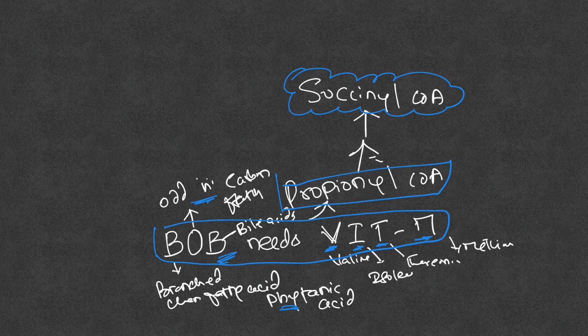There are a variety of reactions that can fill gaps in the TCA cycle — these are all called anaplerotic reactions. This is why the TCA cycle is referred to as an amphibolic cycle: it participates in both catabolism and anabolism.